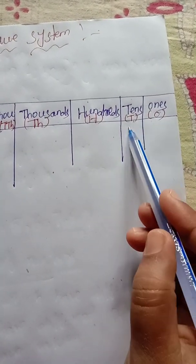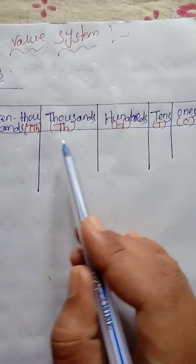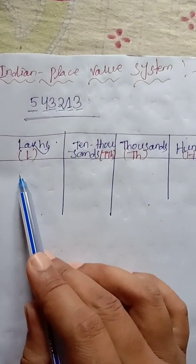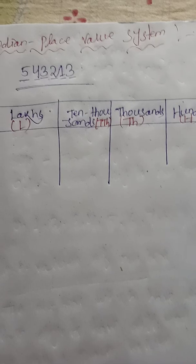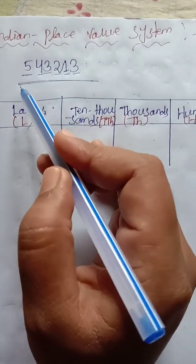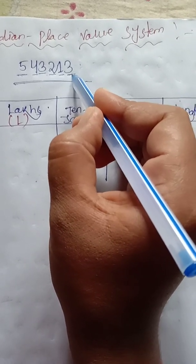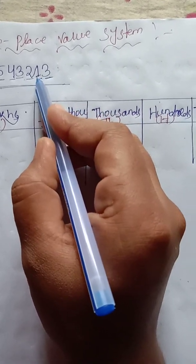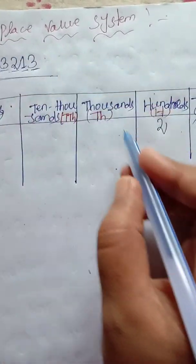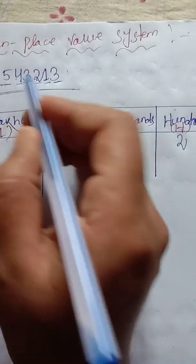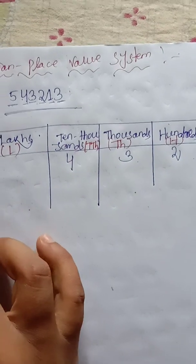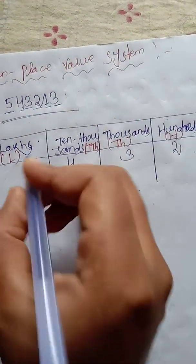After the ones place comes the tens place, then hundreds, then thousands, then ten-thousands, then the lakhs place. Now we find out the place values of these digits. The right side digit is 3, so you put this digit in the ones place. Before 3 is 1, so you put 1 in the tens place. Next, 2 is in the hundreds place. Then 3 is in the thousands place. Then 4 is in the ten-thousands place. Then 5 is in the lakhs place.